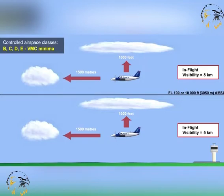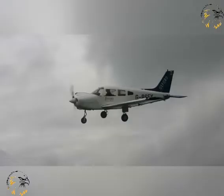Illustrated on screen here are the ICAO VMC minima in controlled airspace. When VMC minima are not reached, instrument meteorological conditions, or IMC, are said to prevail. You will learn more about VMC and IMC later on in this lesson.